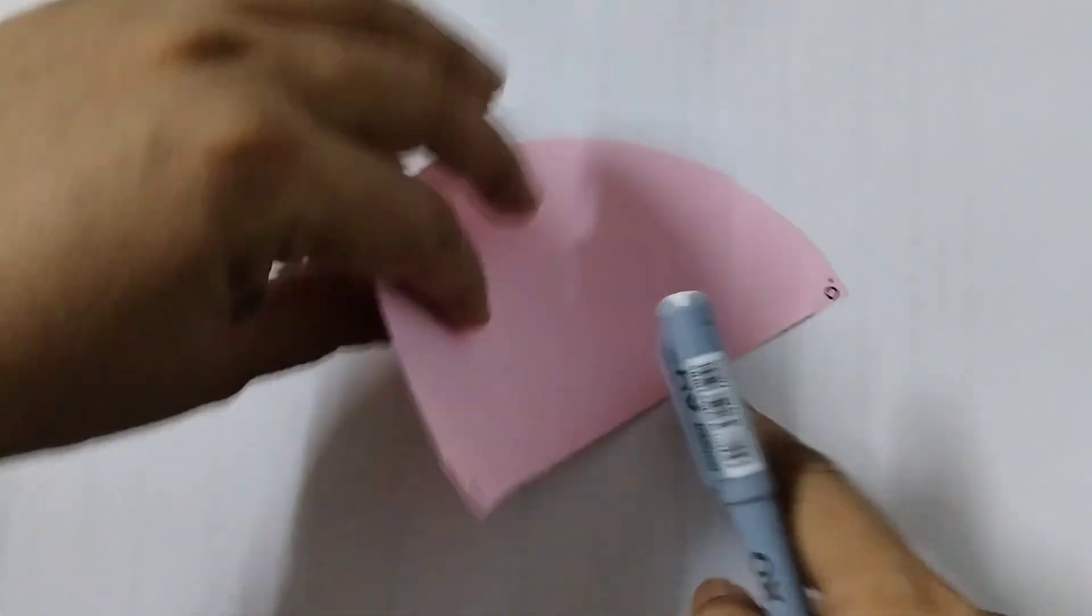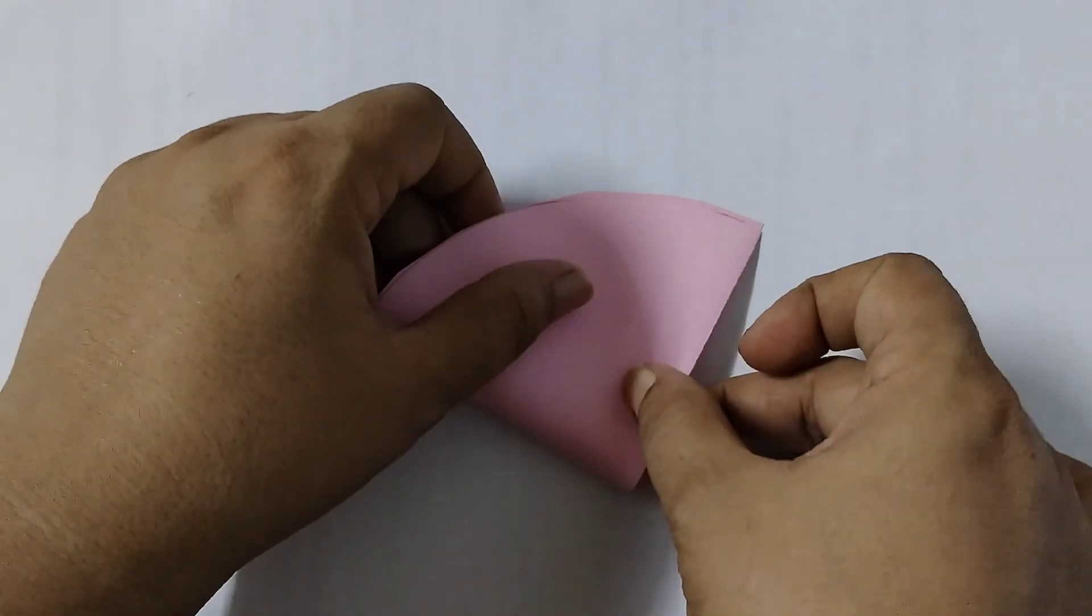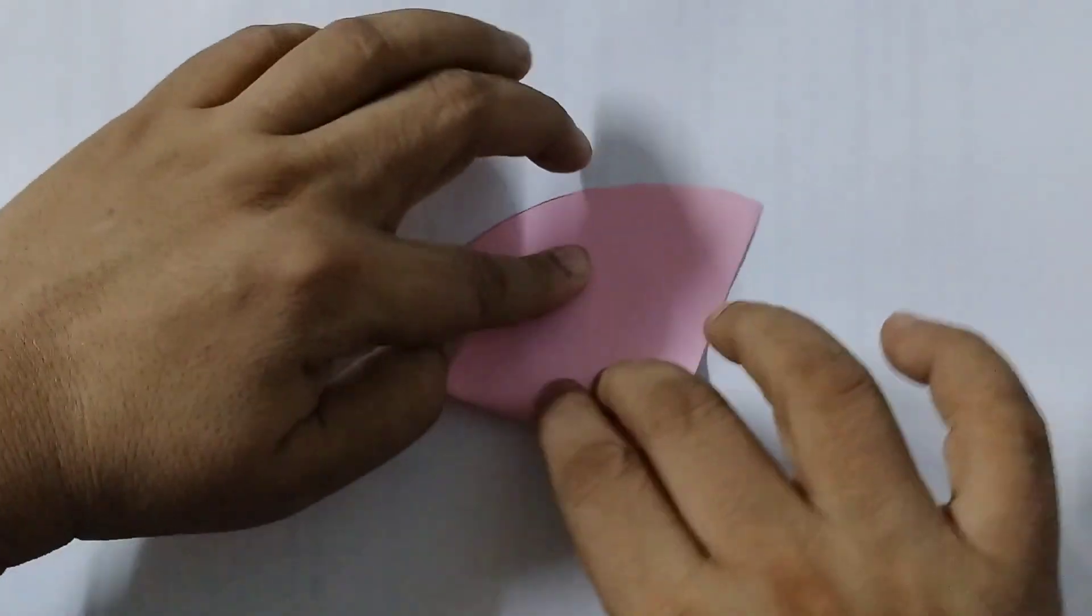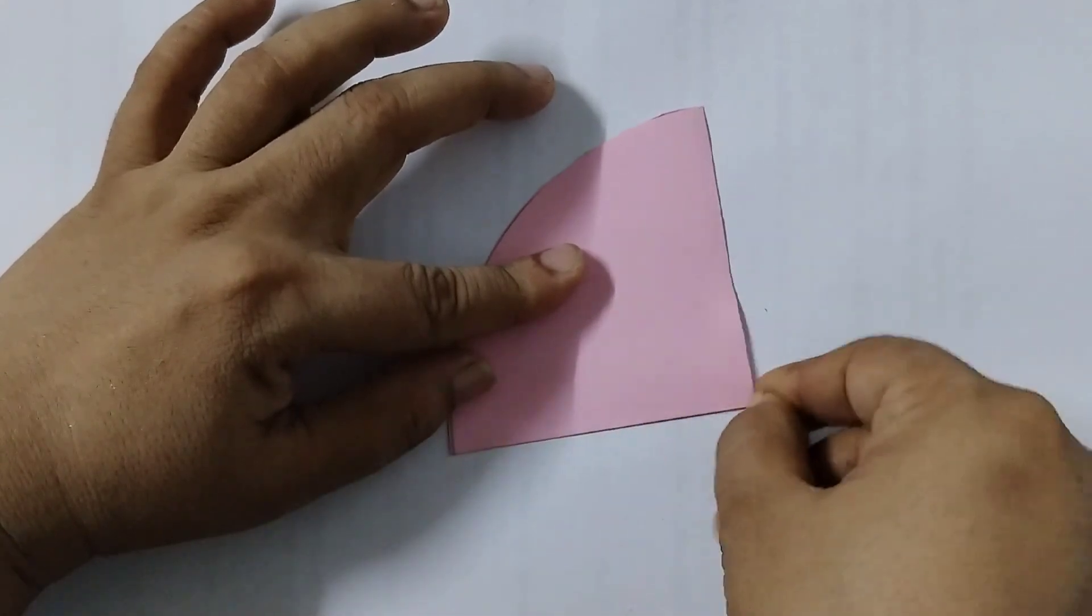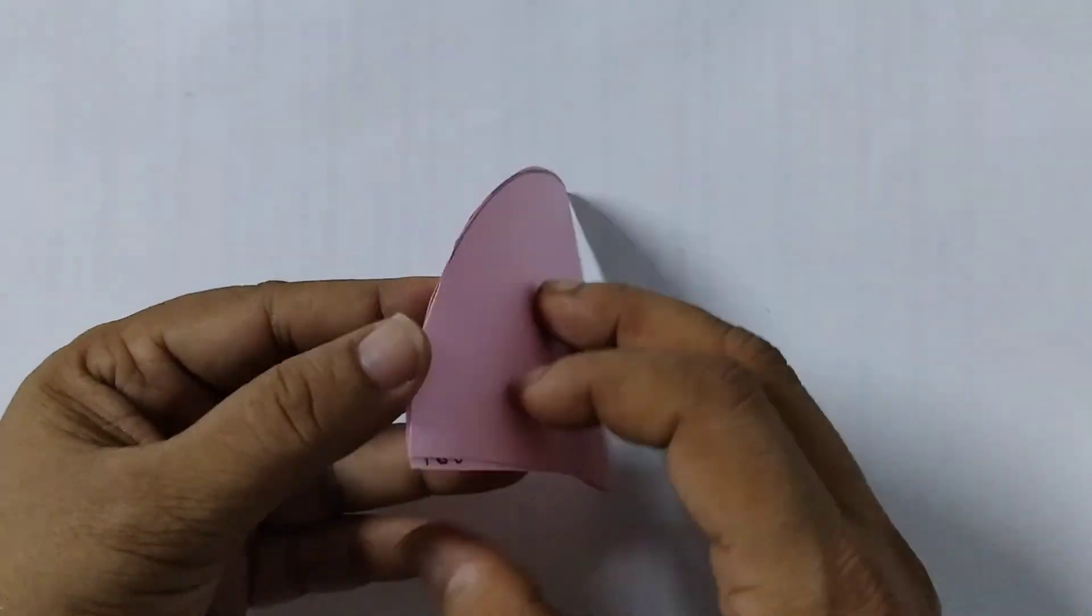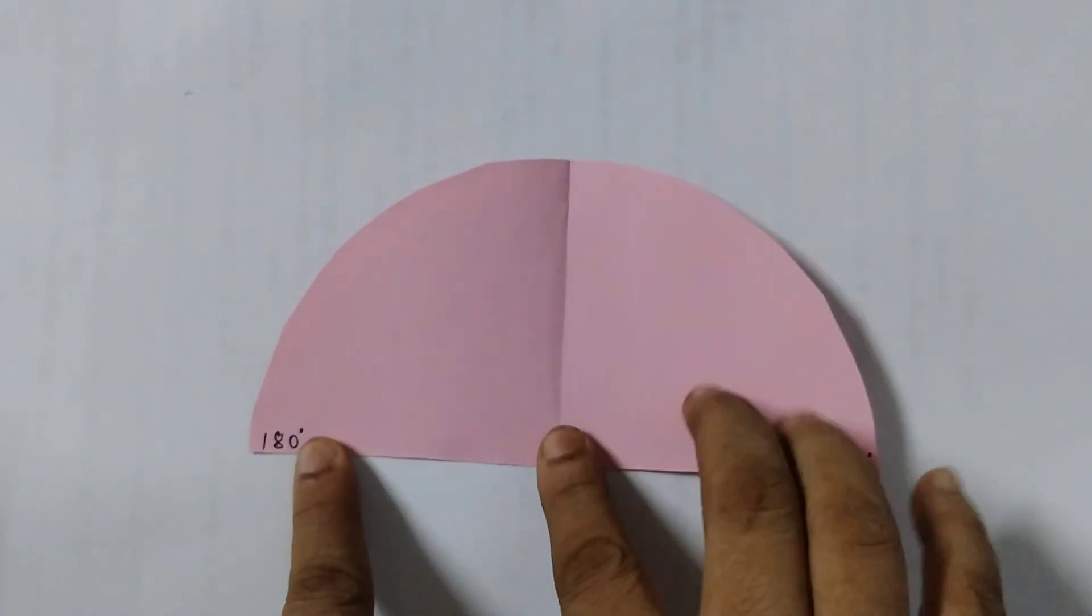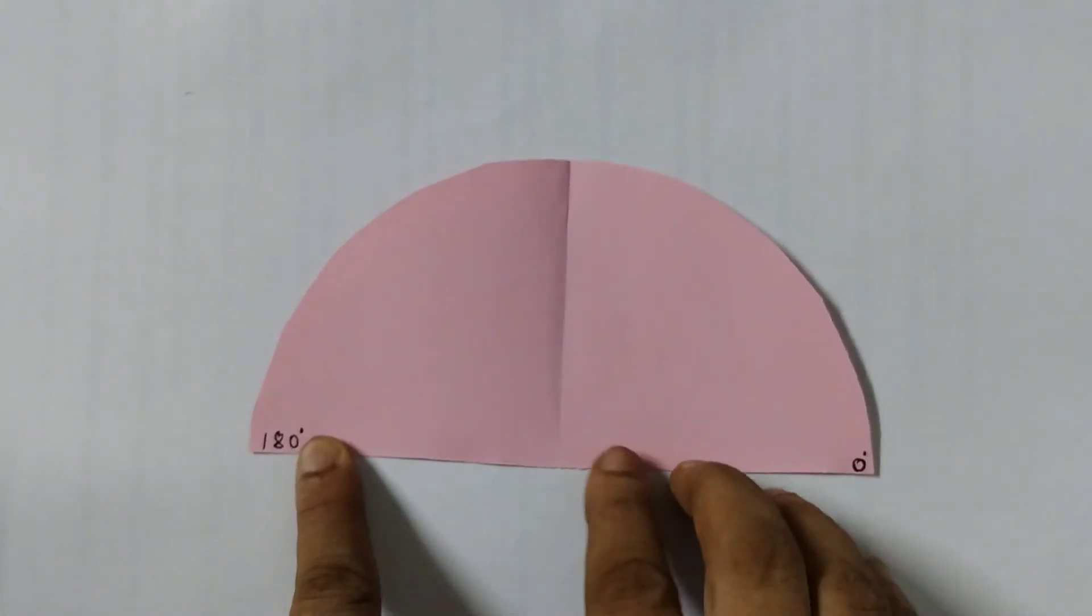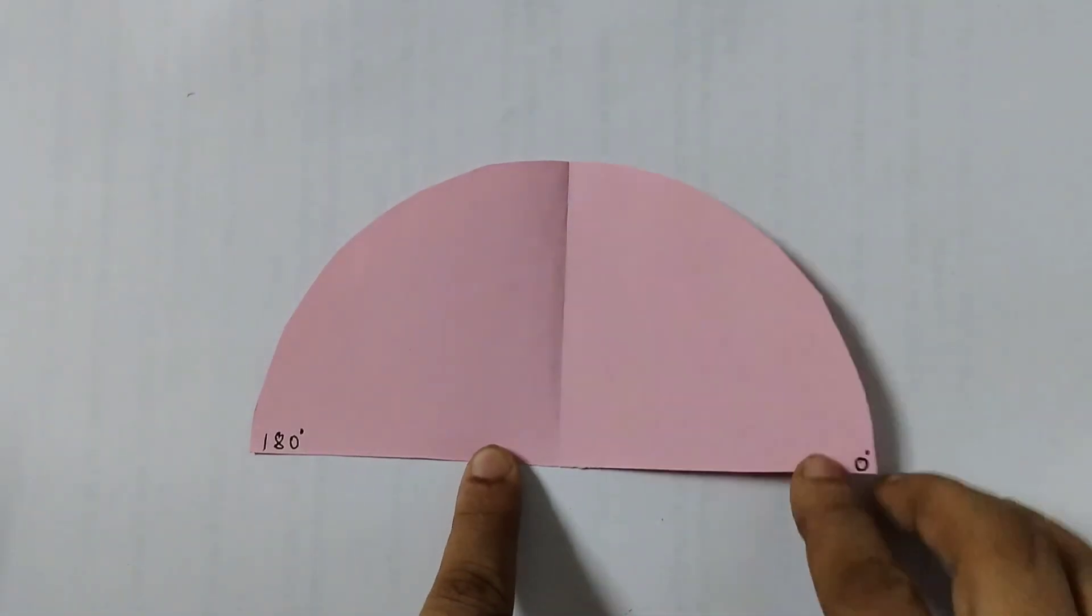Now we are going to fold it again. This is step number three: fold the semicircular sheet in half and again we will get a crease here. Now this is half of 180 degrees, so that will be 90 degrees. This is a 90 degrees angle, L-shaped angle. So we write here 90 degrees angle.